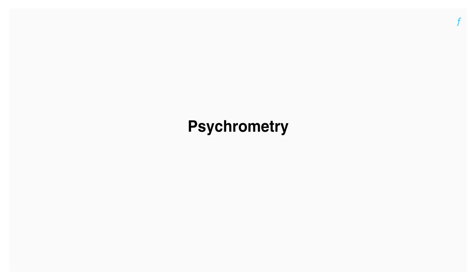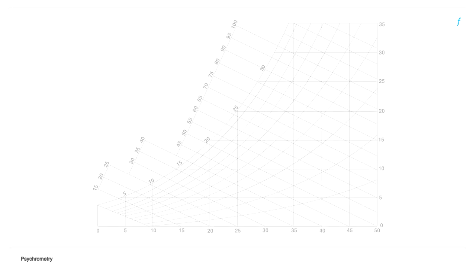Psychrometry is the study of moist air and psychrometric charts are the tools used to study them. Let's have a look at the elements of this chart and use them as a reference to understand evaporative cooling.